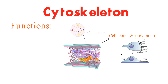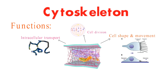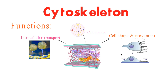The cytoskeleton helps to transport organelles and vesicles around the cell. For example, the cytoskeleton can use microtubules to move vesicles from the Golgi apparatus to the plasma membrane.